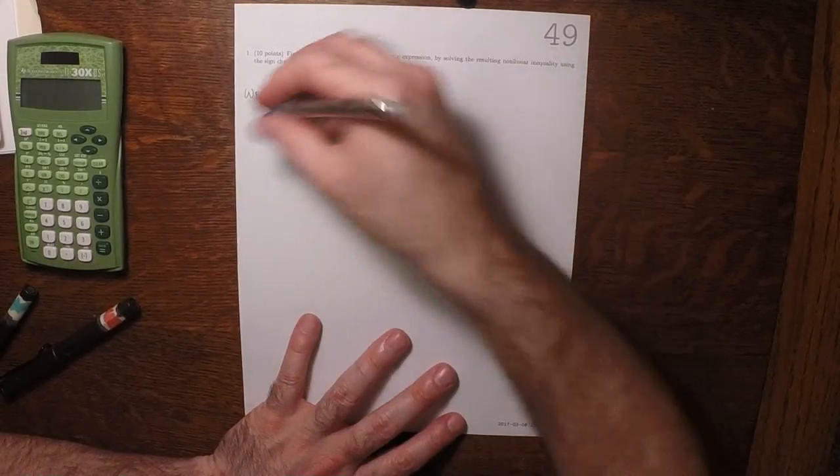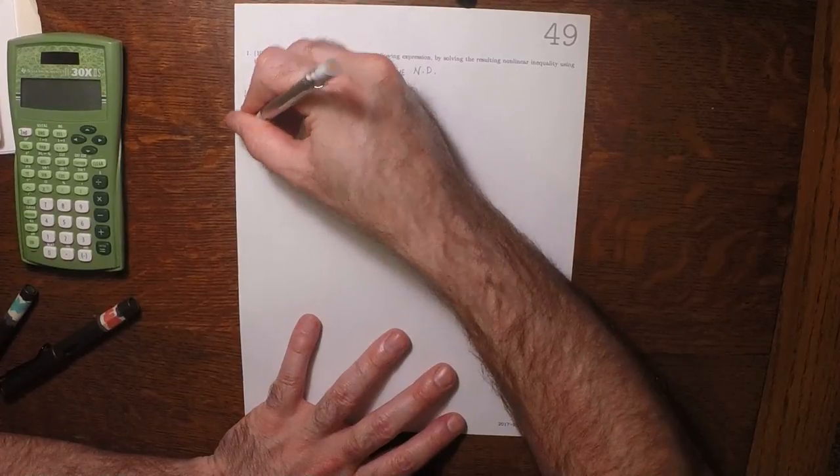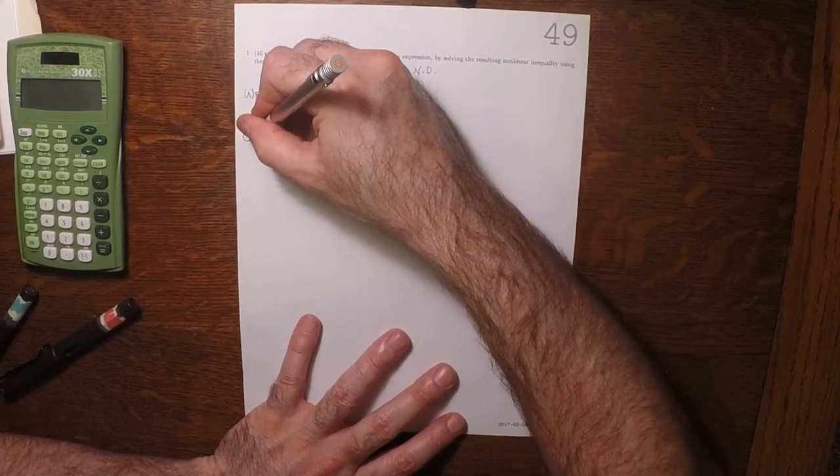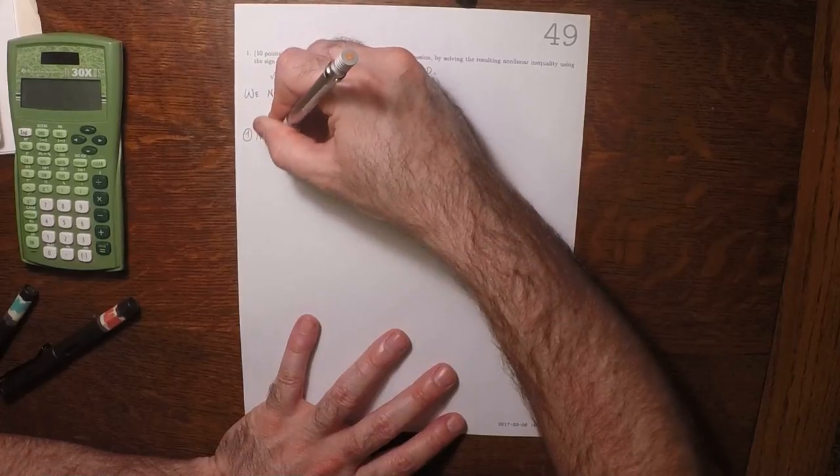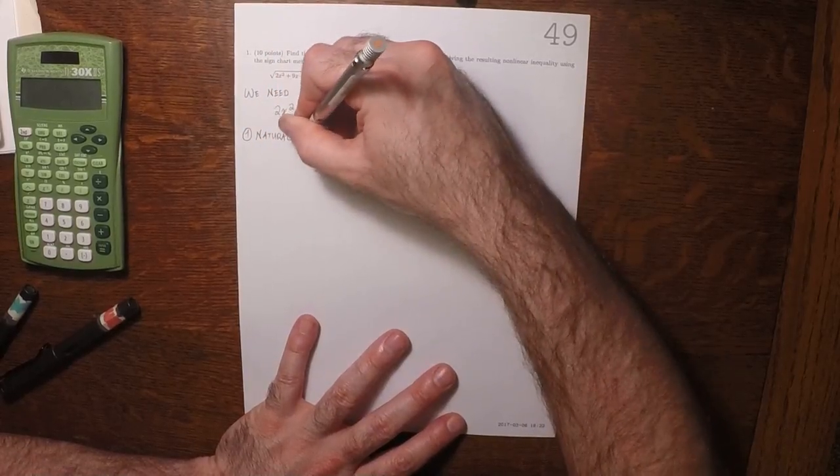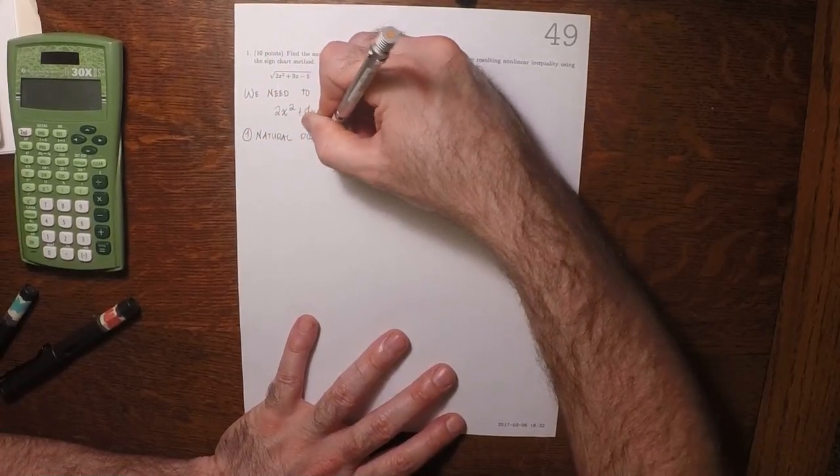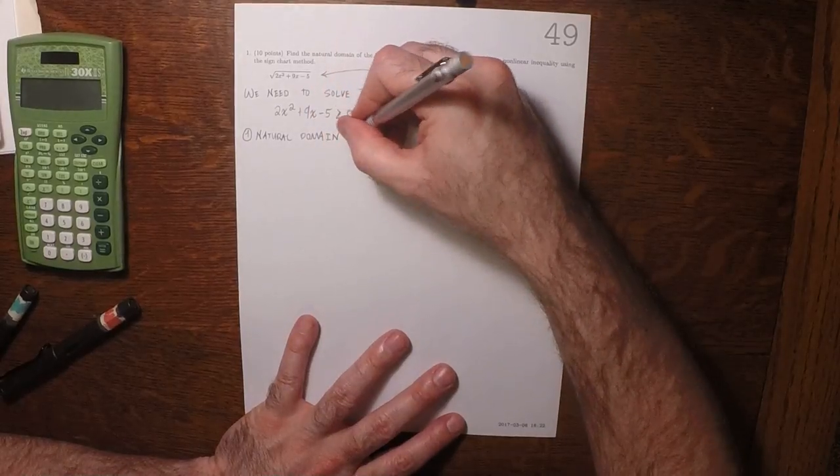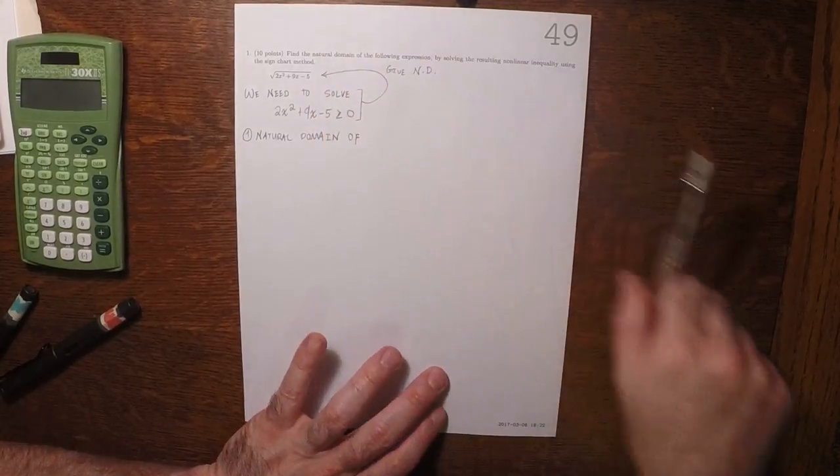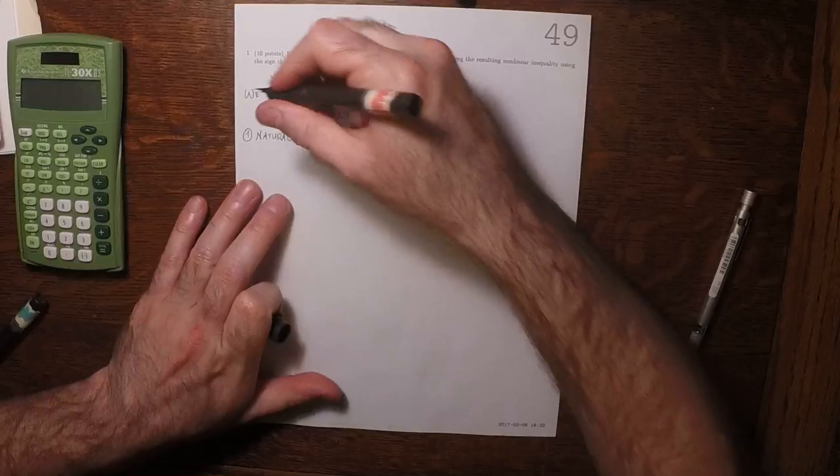And we're going to do that using the sign chart method. So first step is we need to find the natural domain of this inequality.